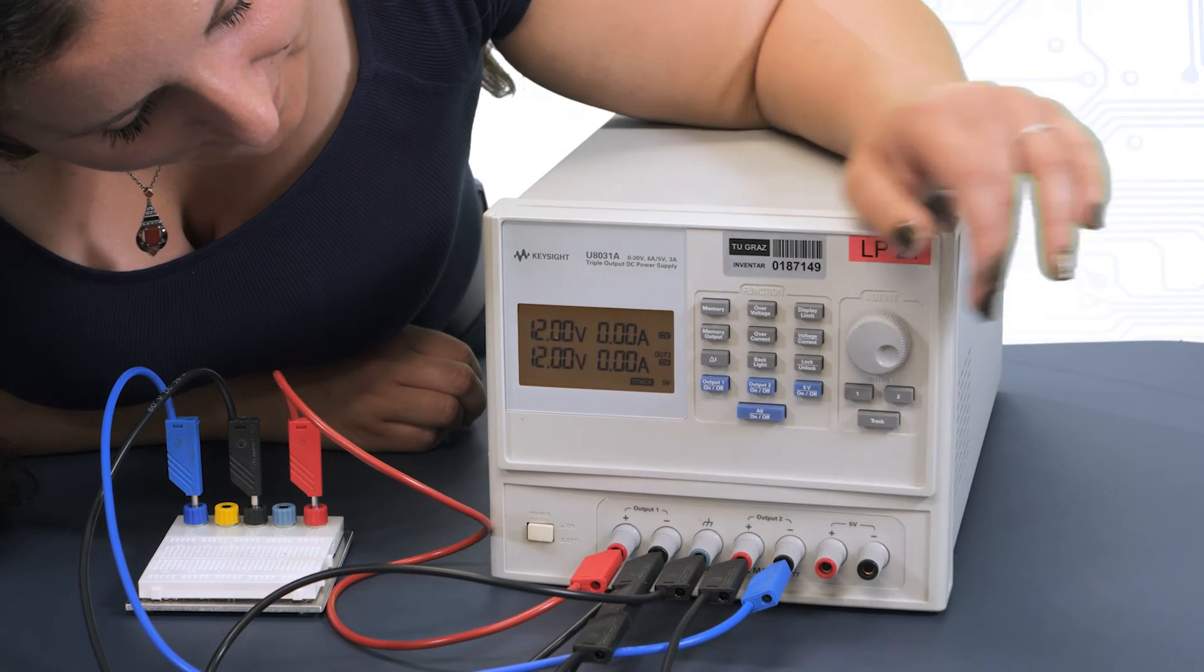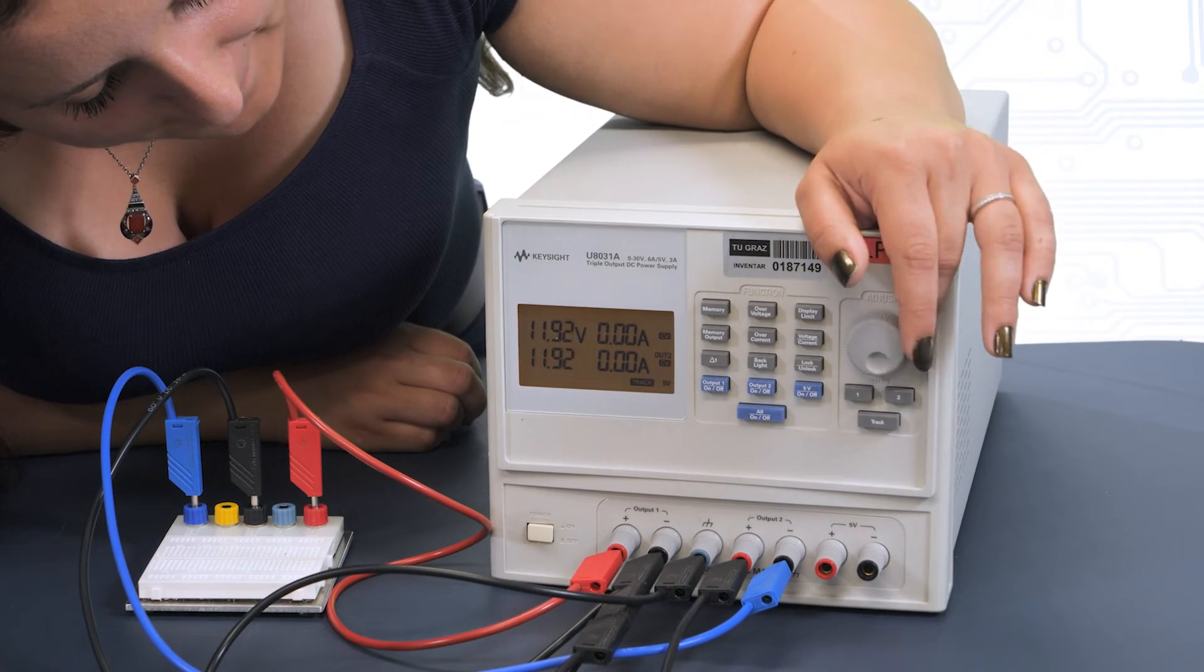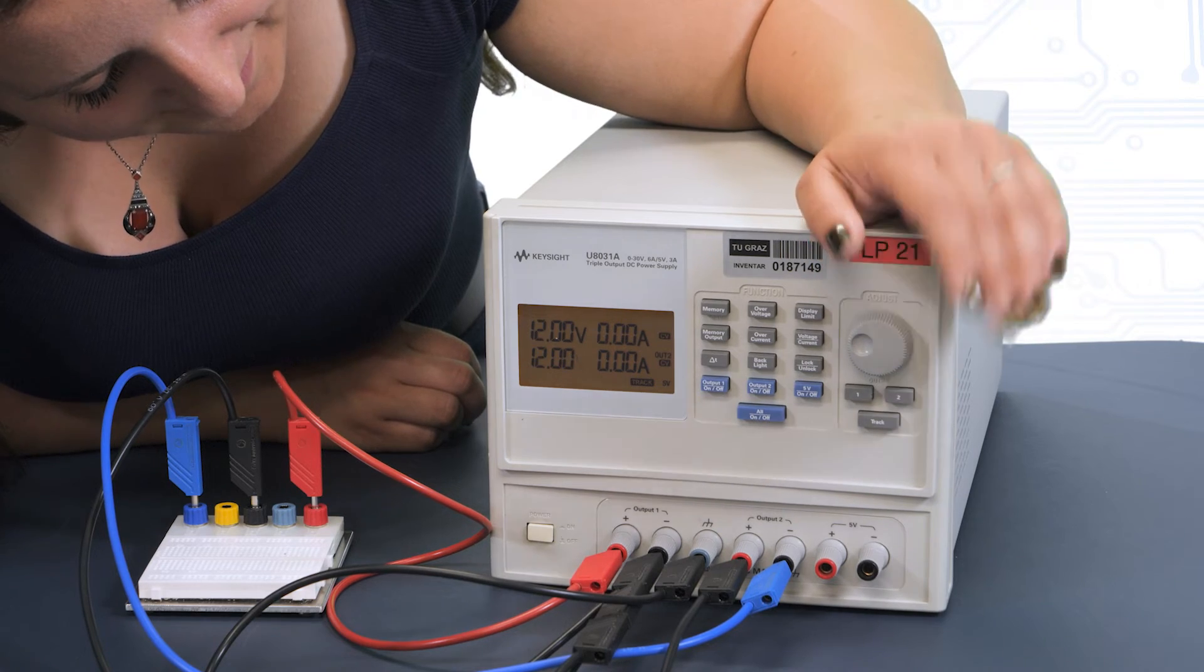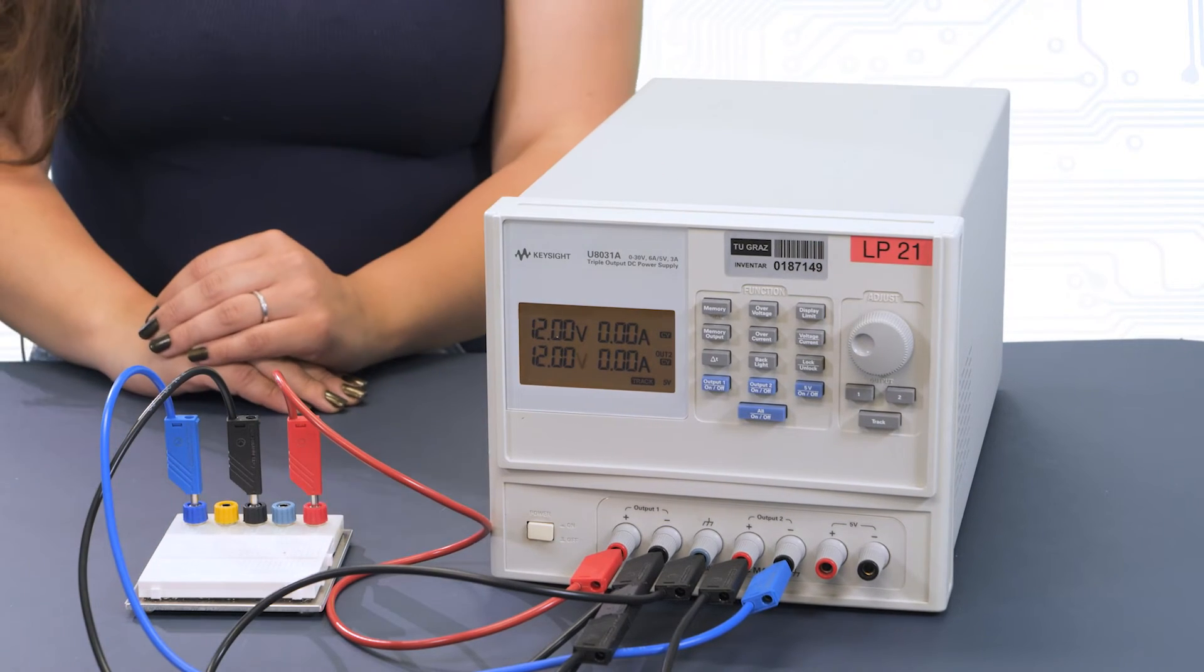This convenient function causes one output to follow the other. Because the reference is once on the plus and once on the minus side of the power supply's outputs, we achieve exactly the desired opposite voltages. Since the connections are not connected internally, we have to connect the individual references ourselves.